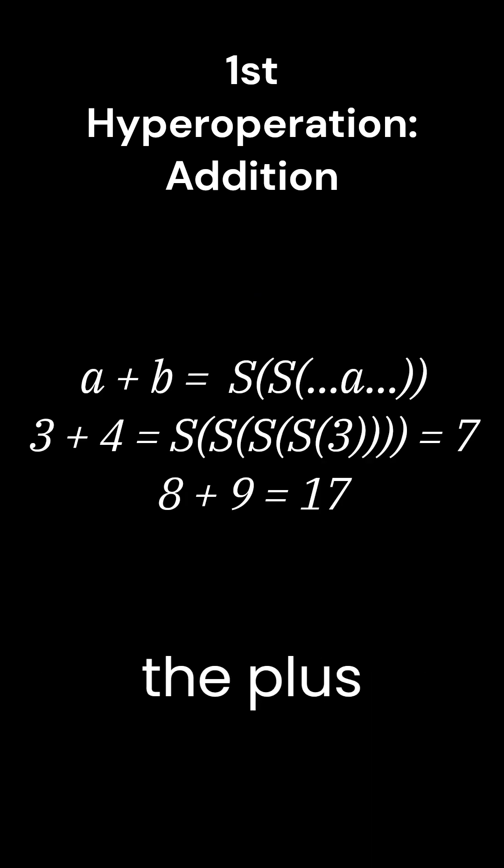Addition is the first arithmetic operation, or hyperoperation. It is repeated succession, and the plus symbol is used to represent it. A plus B is defined as adding 1 to A, B times.